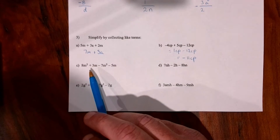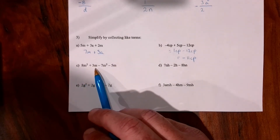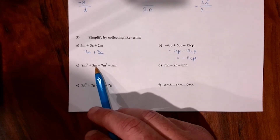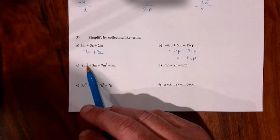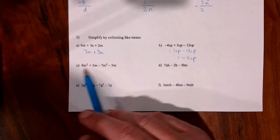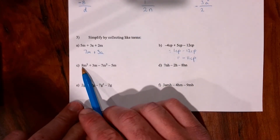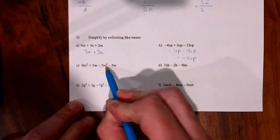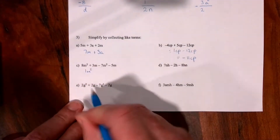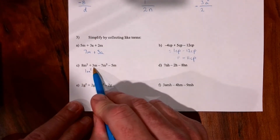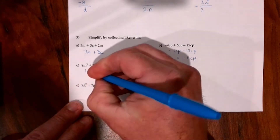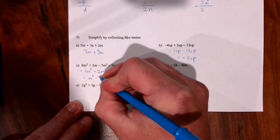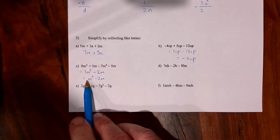Question 3c has two different sorts of terms: m squareds and m's — and we're not allowed to collect these, because they're not the same. m squared means a number multiplied by itself, while m is a standalone number. If m were 3, the m squareds would be 9s and the m's would be 3s. So: we have 8 groups of m squared, take away 7 groups of m squared, leaving 1 m squared — normally we wouldn't write the 1. Then 3m take away 5m gives negative 2m. The most mathematical way is without the 1, since a missing number is assumed to be 1.